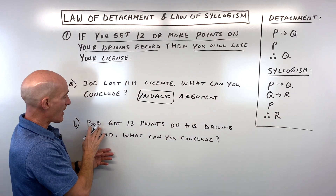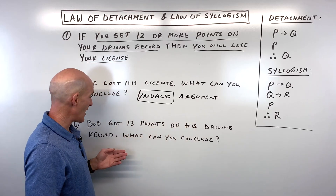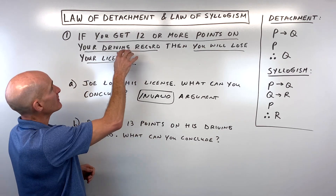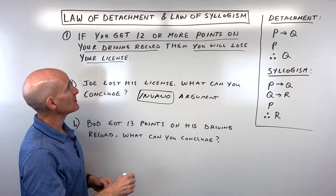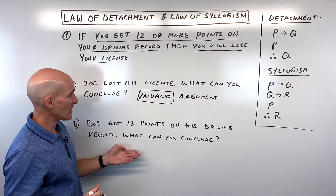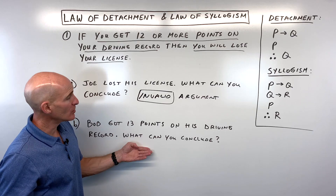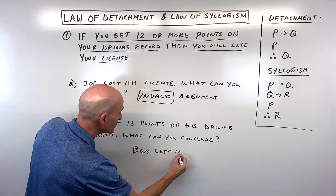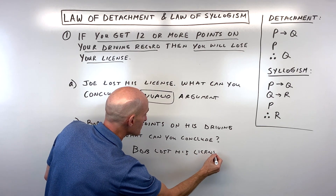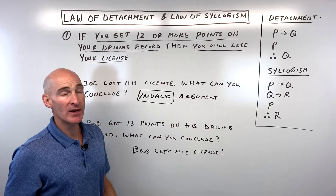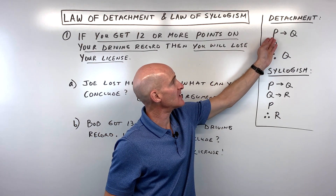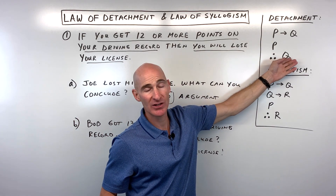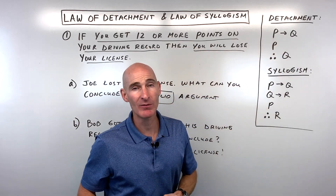Now let's look at letter B: Bob got 13 points on his driving record — what can you conclude? The hypothesis was satisfied, meaning the condition of getting 12 or more points on someone's license — that's what happened, that's what Bob did. So what can we conclude? Bob lost his license. That one is the law of detachment: we have these two quantities, if P then Q, say that's true, P happens, then we can naturally make the assumption that Q is going to happen, assuming that this conditional statement is true.